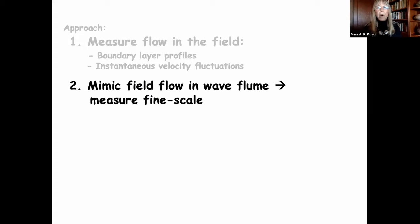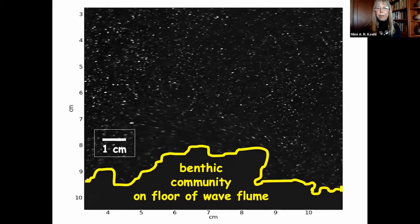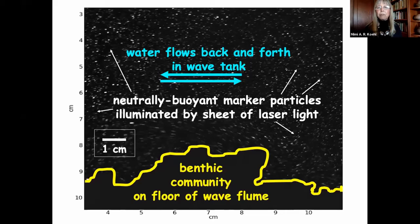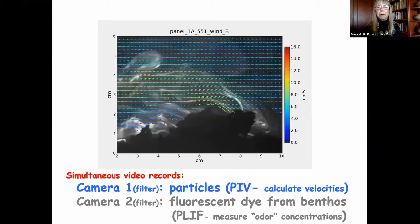We want to mimic that kind of flow in a wave flume so we can do finer-scale measurements. You can see the benthic organisms on the floor of the wave flume as the water flows back and forth — we've mimicked the turbulent spectrum and the velocity gradient of the flow we measured in the field. The little snowflakes you see are neutrally buoyant marker particles illuminated by a sheet of laser light. We've also painted the corals with a dye that dissolves off them as our analog for coral odor — chemical cues in the water. This technique is called planar laser-induced fluorescence, and the pixel brightness is calibrated for cue concentration, giving us a fine-scale map of odor concentration.